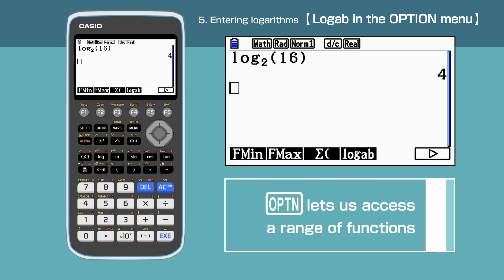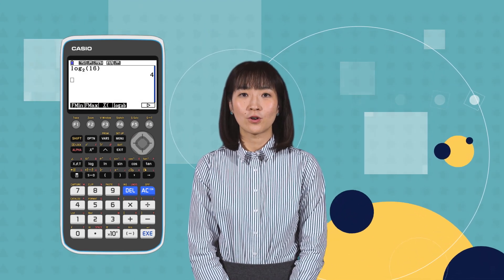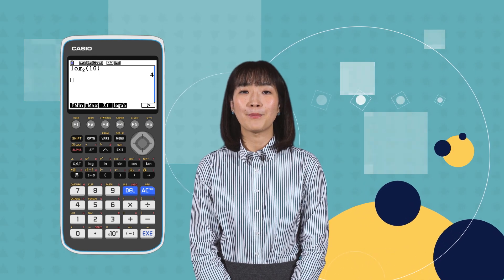The Option key lets us choose from a range of functions such as logs and many others. In this video, we have shown how to set logarithm not base 10.